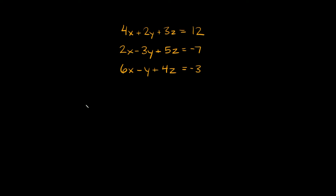In this video I'm going to teach you how to solve a system of equations with three variables. You can see we have three equations and they each have an x, y, and z attached to them. The elimination method is normally a little better than the substitution method when you're dealing with three variables and three equations, so you might want to go with the elimination method.